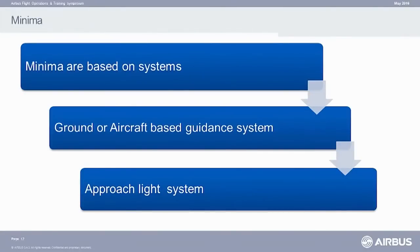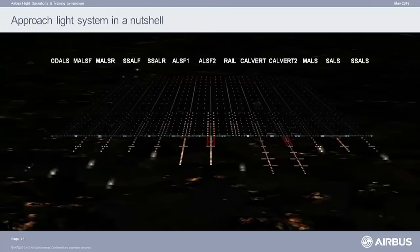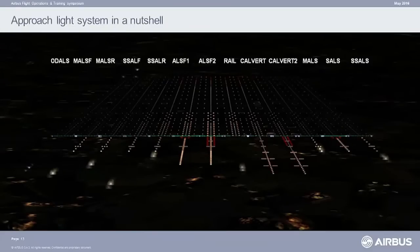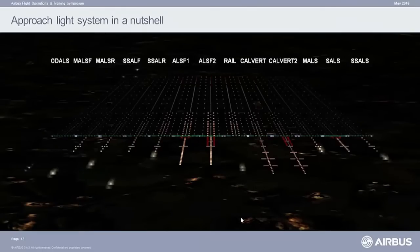So, we have seen the minimas are based on the system — ground-to-aircraft guidance system — as well as on the approach light system. This is a picture I found from a very strange airport where we have all the possible approach lights you can find in the world. All the runways are parallel, so you can choose the approach light system that you want. Going from the center one — the most classical one — where you have two or three light bars, then you have the Calvert system, invented in the UK, where you basically have an arrow shape in the approach light system to guide the pilots to the runway, but we don't find them a lot in the world.